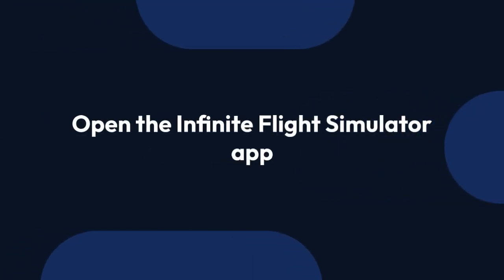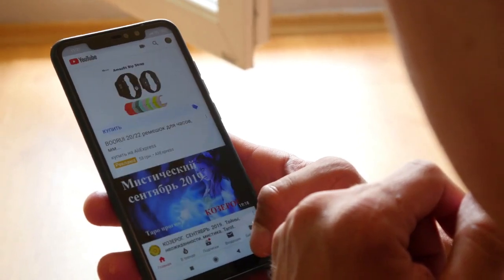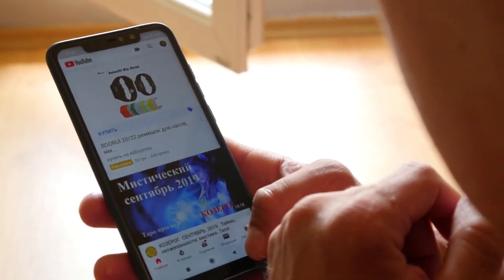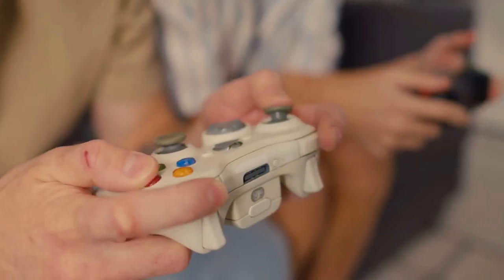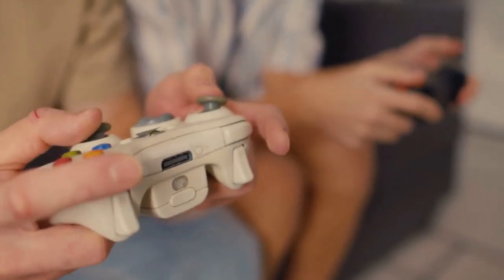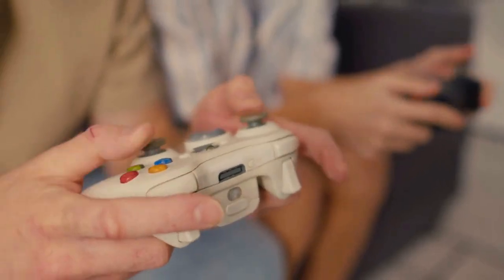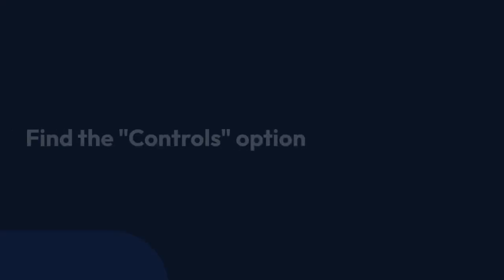Step 1: Open the Infinite Flight Simulator app. Step 2: Once the app is open, go to the Settings menu. It's usually located in the top right corner of the screen.